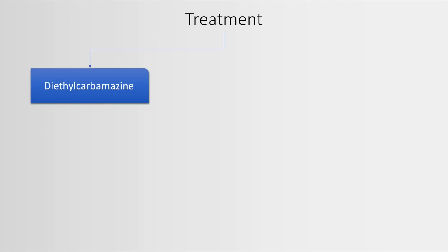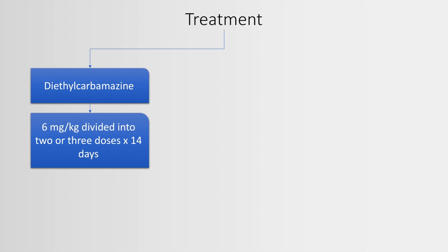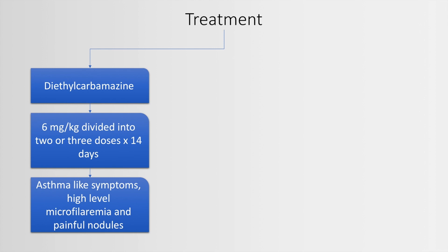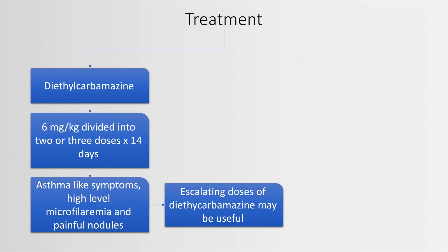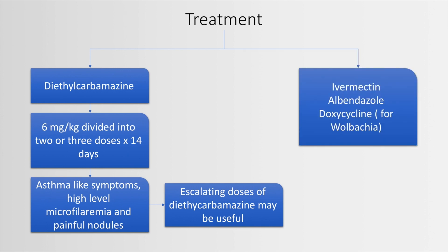The treatment of filariasis begins with diethylcarbamazine, started at 6 mg per kg divided into 2 or 3 doses for 2 weeks. Some patients may develop asthma-like symptoms or painful nodules, and in these patients it may be a good idea to start diethylcarbamazine in escalating doses. Other options include ivermectin, albendazole, and doxycycline for Wolbachia. Wolbachia is an endosymbiont which resides inside Wuchereria and guides and facilitates its reproduction. We may give doxycycline selectively to eliminate Wolbachia from the equation, thereby reducing the survival of Wuchereria itself.